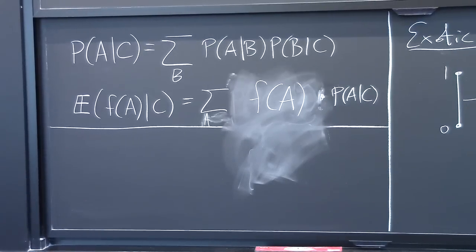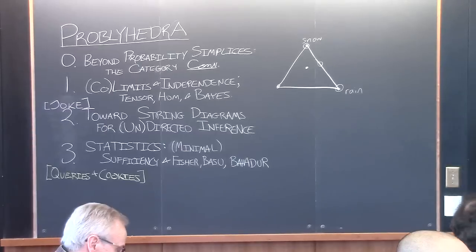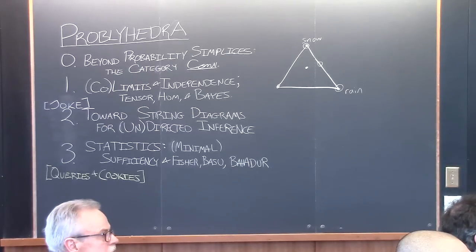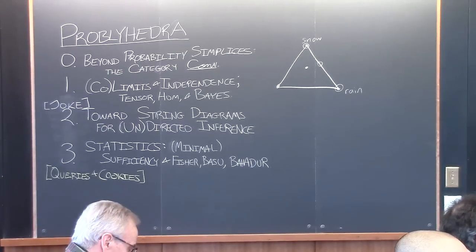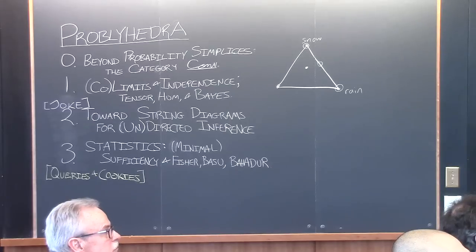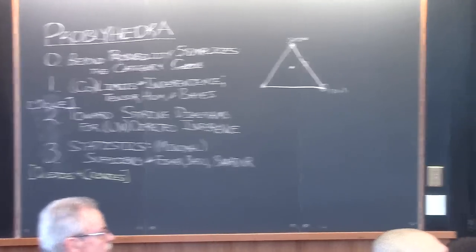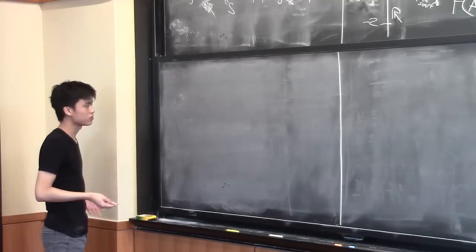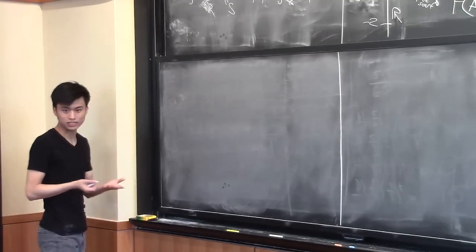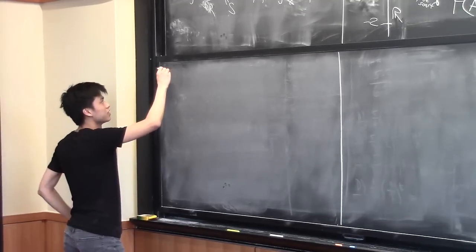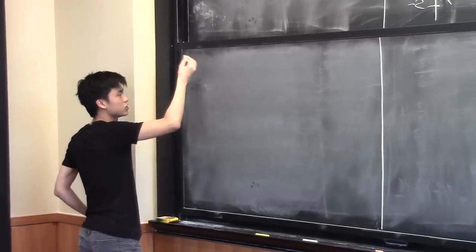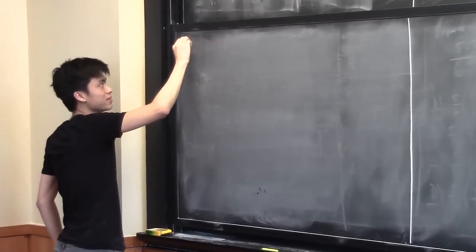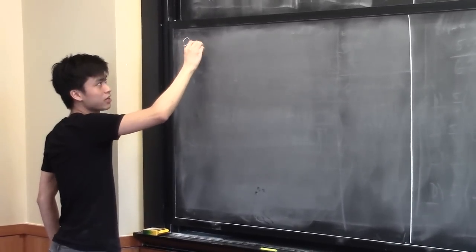Now that we're familiar with this category, let's talk about the colimits and so forth — the cool constructions. Let me quickly go through what the limits, colimits, tensor, and hom are, and then we'll see what they mean very concretely. Let's start with limits — first let's show it has products, and then we'll show it has equalizers.